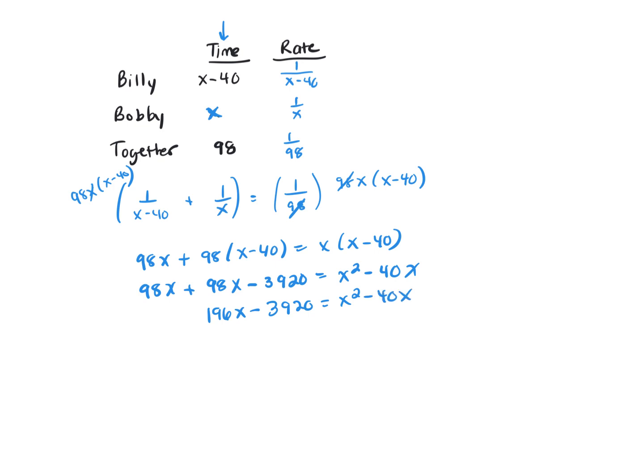This is a quadratic equation, we need to get 0 on one side. So that's going to be X squared, we need to subtract 196 from both sides. So we already have negative 40 minus 196, and that's negative 236X. Add the 3920 to both sides. There's your equation.